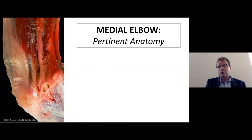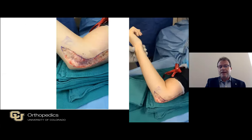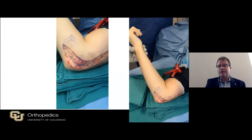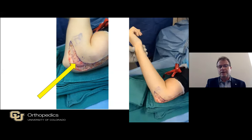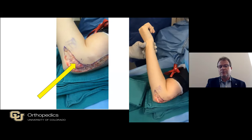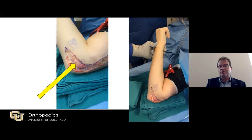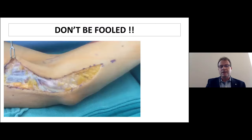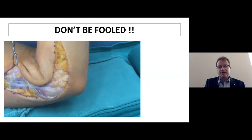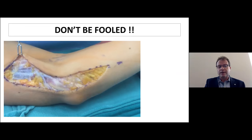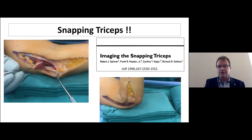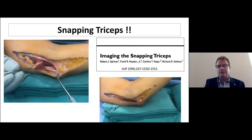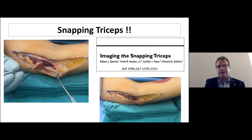The medial elbow is also a source of ulnar nerve symptoms. The medial epicondyle, the two heads of the FCU, and the ulnar nerve can be a source of symptoms if the patient has very subtle ulnar nerve instability at the elbow. Ulnar nerve instability creates irritation of the nerve, resulting in an unhappy FCU tendon. Don't be fooled at the ulnar nerve with the snapping triceps — a careful examination for ulnar nerve irritability will reveal the triceps tendon subluxing — well picked up on ultrasound. This is effectively treated with recession of the triceps and repositioning.